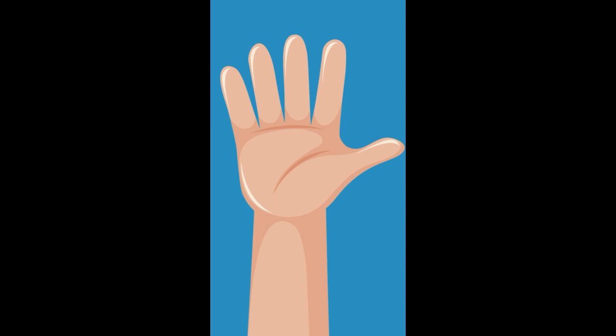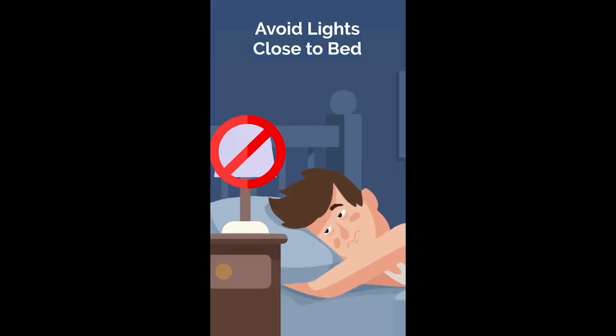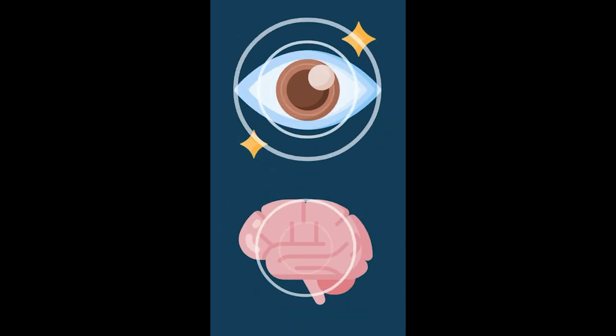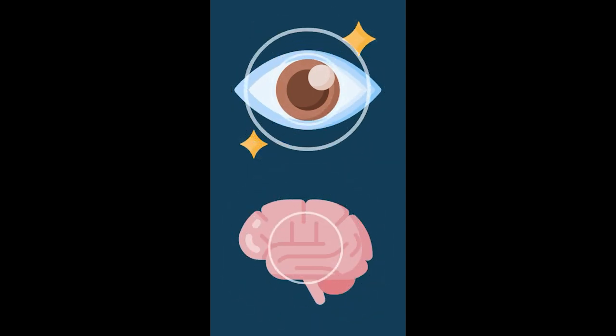And fifth, avoid lights, particularly blue light, close to bed, as this suppresses the release of melatonin. Our eyes and brains are more sensitive at night to even a dimly lit smartphone or laptop, which can cause sleep disruption.